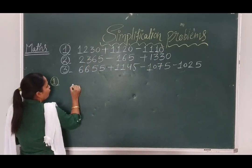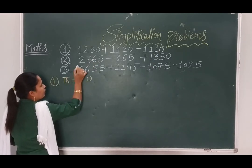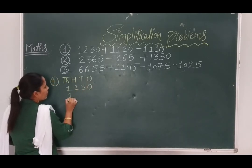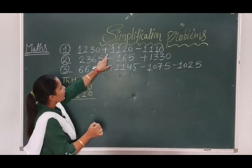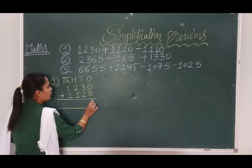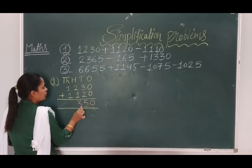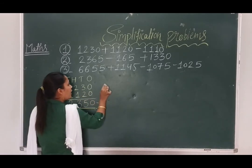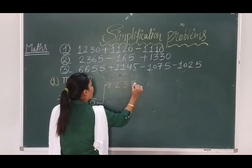First we write the values in place value columns: ones, tens, hundreds, thousands. The first number is 1230, then 1120. Now, at addition time, we add these numbers: 0 plus 0 is 0, 3 plus 2 is 5, 2 plus 1 is 3, 1 plus 1 is 2. So the answer is 2350.